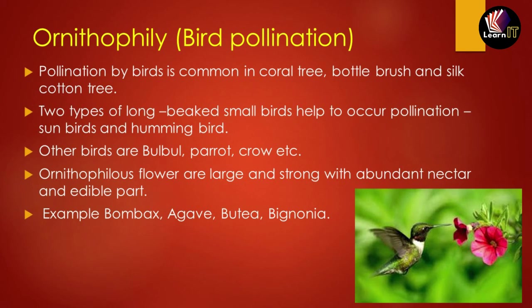These ornithophilous birds visit ornithophilous flowers, which are large and strong with abundant nectar and edible parts, and help in the transfer of pollen grains from one place to another. Examples of flowers in which ornithophily occurs include Bombax, Agave, Butea, and Bignonia.